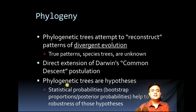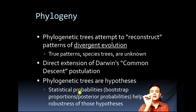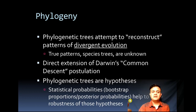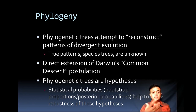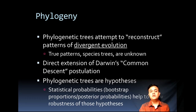Phylogenetic trees do contain statistical probabilities. Depicting statistical probabilities inside the tree is done using bootstrap proportions or posterior probabilities, and there are multiple ways to do that. This helps assess the robustness of the hypotheses. In a way, bootstrap proportions are analogous to p-values for trees.